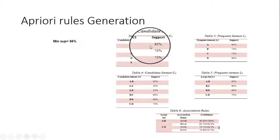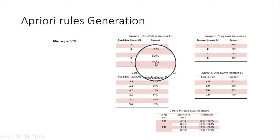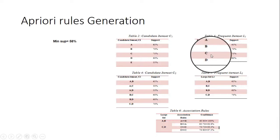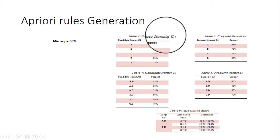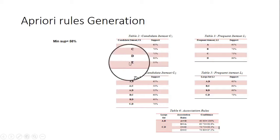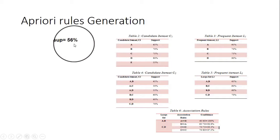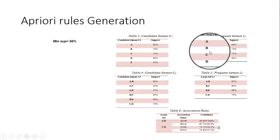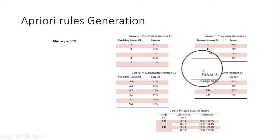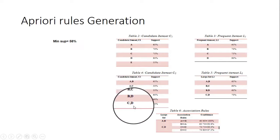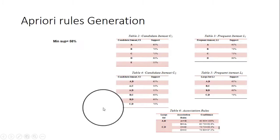After rejecting E, we are left with 4 item sets. We then generate another candidate set using combinations of these 4 — that is, AB, AC, AD, BC, BD, and CD. We find the combination counts from the transaction dataset and calculate the support for all these 2-item sets — known as the frequent 2 candidate set generation.